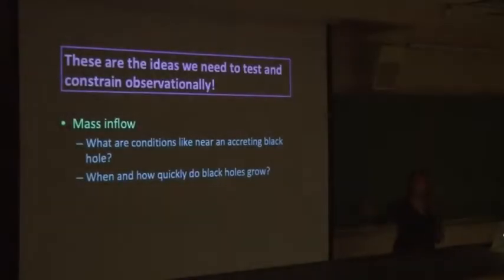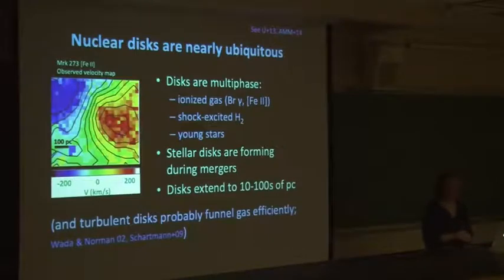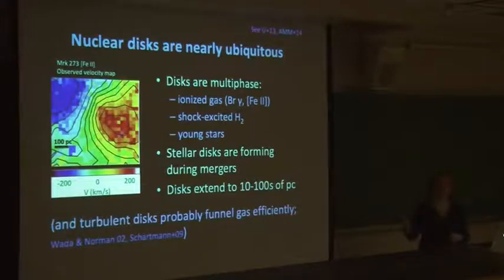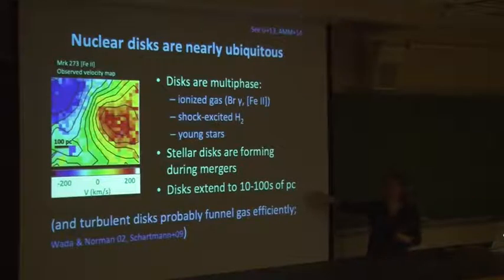So with just one spectrum we get quite a lot of information about all these different physical processes, in a spatially resolved sense. Going back to the ideas we want to test observationally — the first thing we learned from our sample is that nuclear disks around these black holes are nearly ubiquitous. We see them in almost every galaxy nucleus we look at, in every tracer — ionized gas, warm molecular gas, and young stars formed during the course of the merger. We see them in galaxies with two nuclei and galaxies with one, which means even if you destroy the disks, they reform really quickly after coalescence. These nuclear disks are a few tens to a few hundreds of parsecs in scale radius, and they're turbulent — they have v over sigma of a factor of a few.